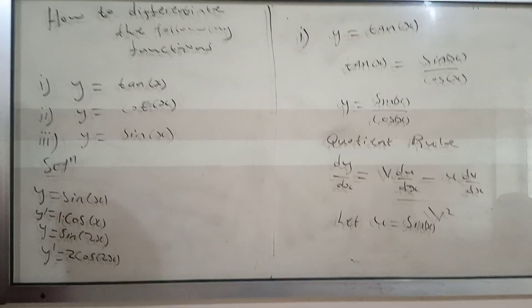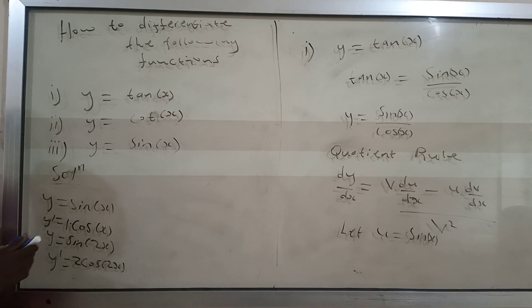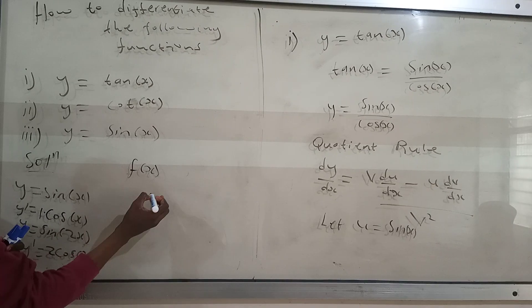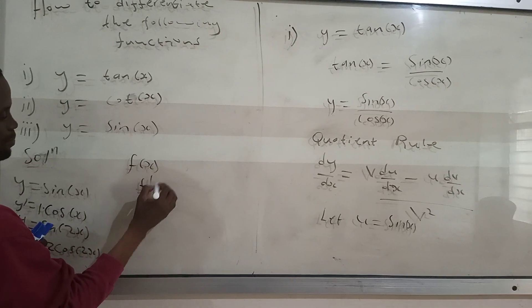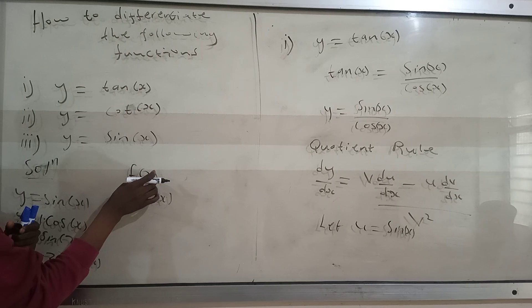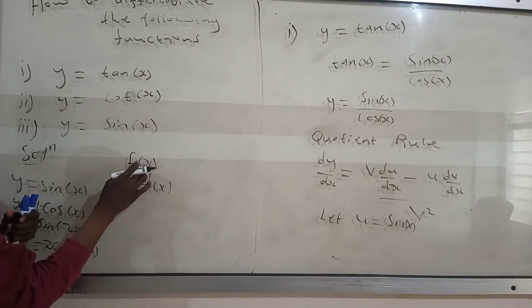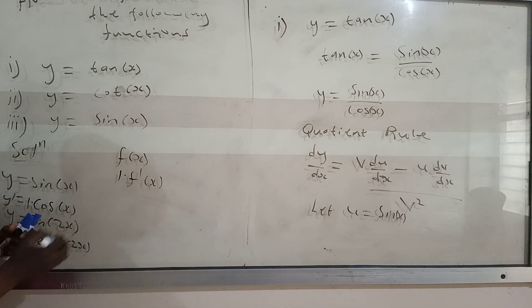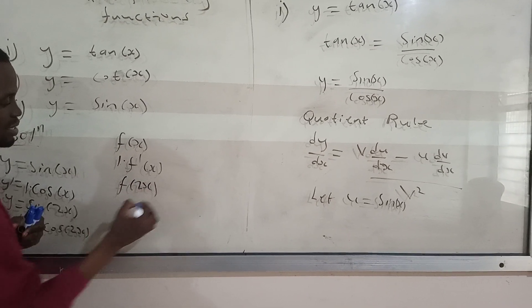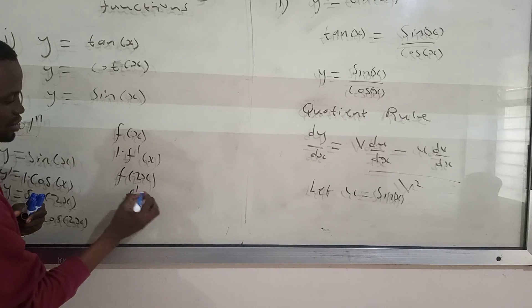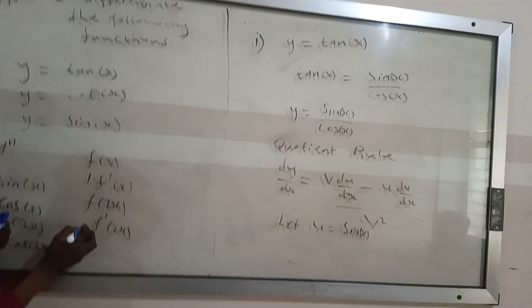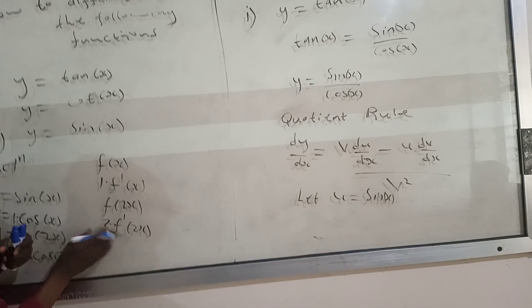In simple terms, if you have a function f of x and you want to differentiate it, you're going to get f prime of x. But that's not all — you also have to differentiate the one in the brackets, that is x, and you'll get one, then multiply it by this. If you have f of 2x and you want to differentiate it, you get f prime of 2x, then differentiate the one in the brackets and multiply — so you get times 2.